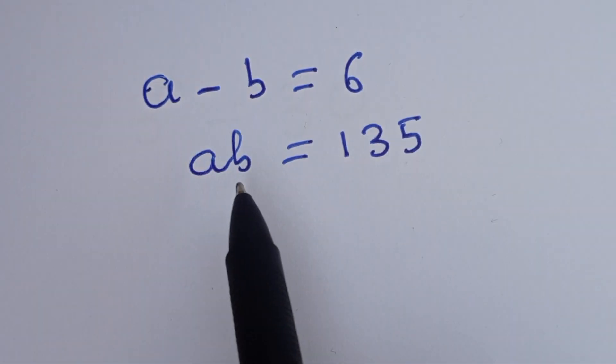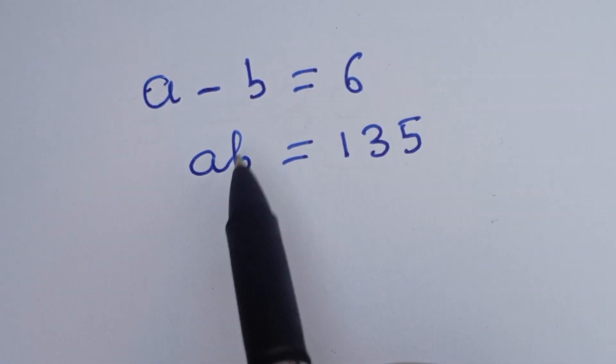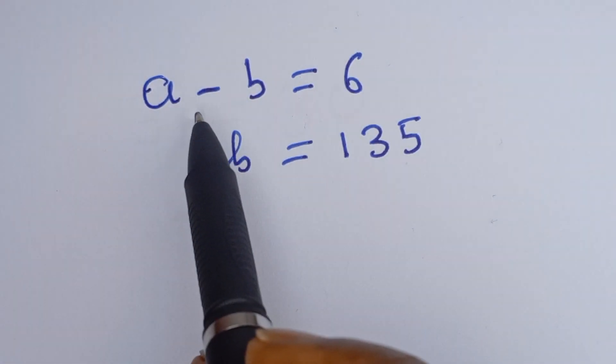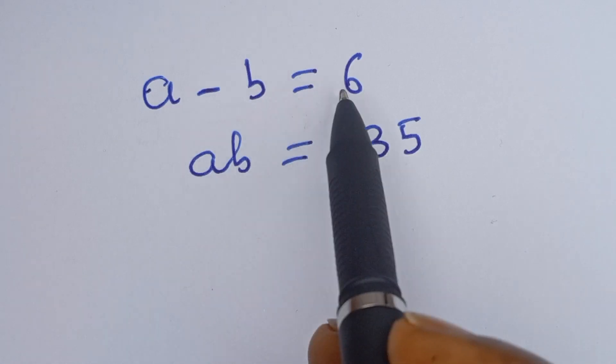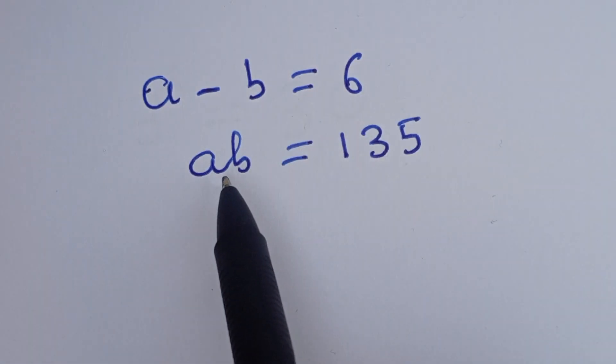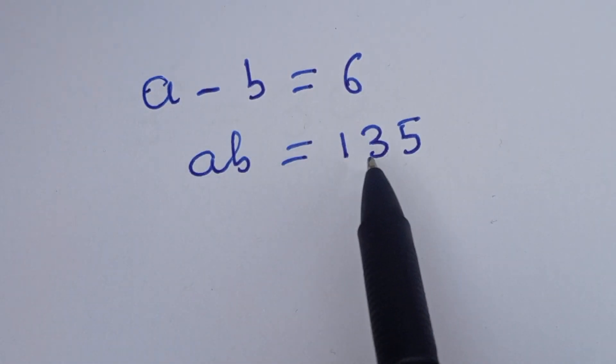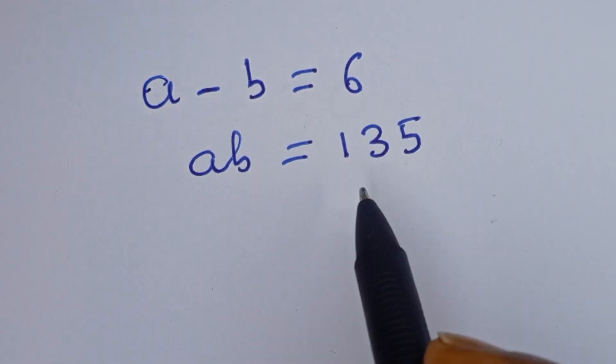Hello, how to solve for A and B in this beautiful equation. A minus B is equal to 6, and AB is equal to 135.